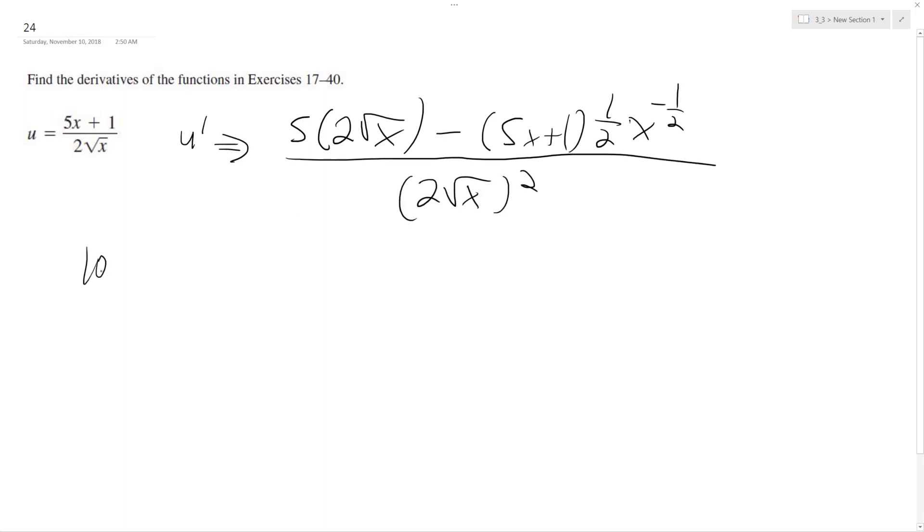So I get 10 root x minus 5 over 2, x raised to the negative half, minus 1 half, x raised to the negative 1 half. I'm distributing the derivative there. And this is all over, and then denominator squared is equal to 4x.